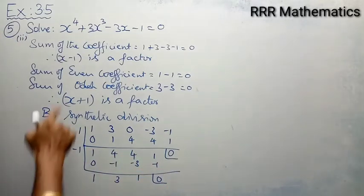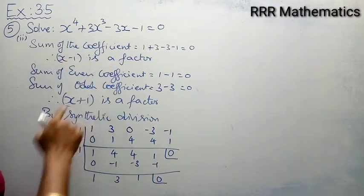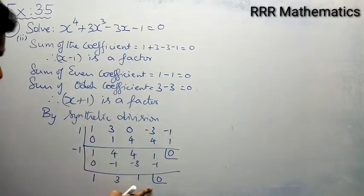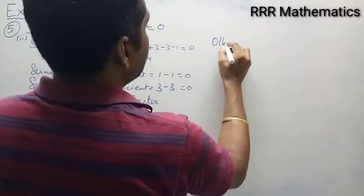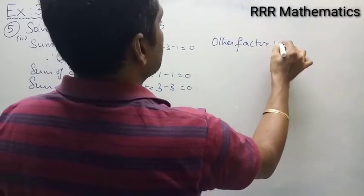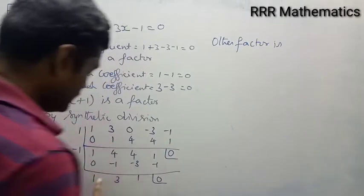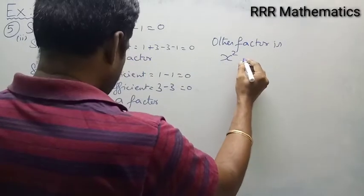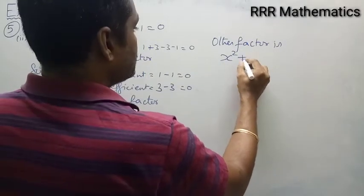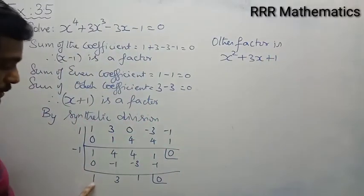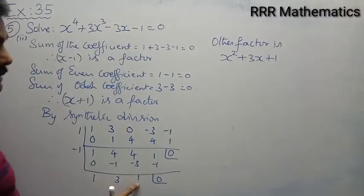So by using synthetic division, the degree 4 polynomial is reduced to degree 2. The other factor is x² + 3x + 1.